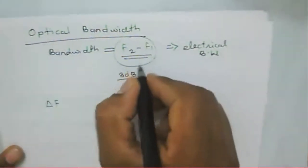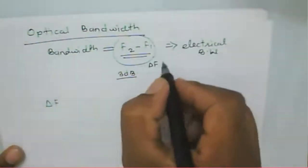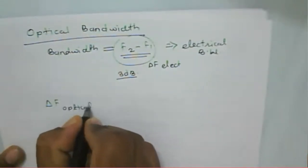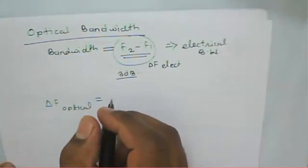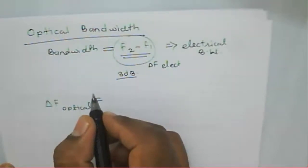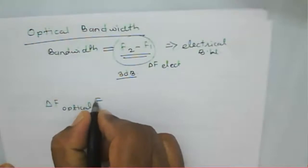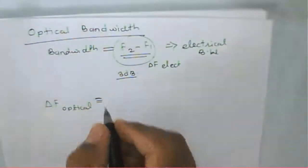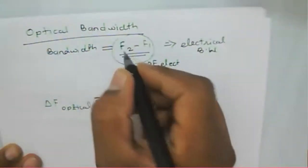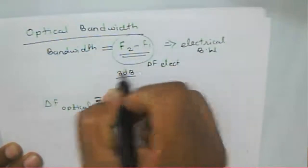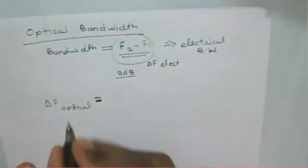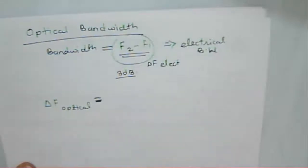In terms of electrical bandwidth, the range of frequencies falls within the 3dB value — that is, it falls to 50 percent of the power. So we can say that is about the half-power point. The optical case is different because we consider it in terms of light, and light propagation is proportional to the square root of the current.